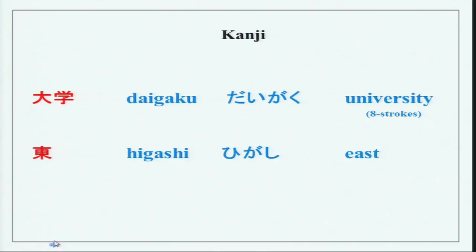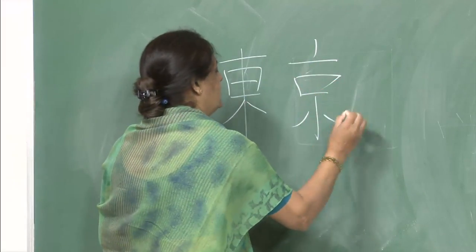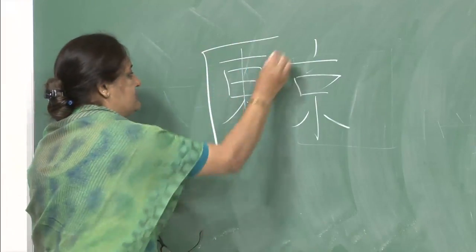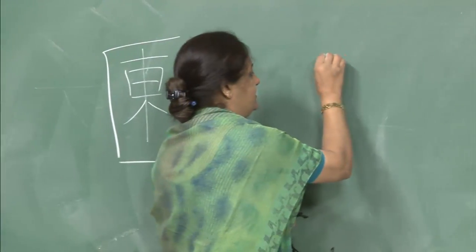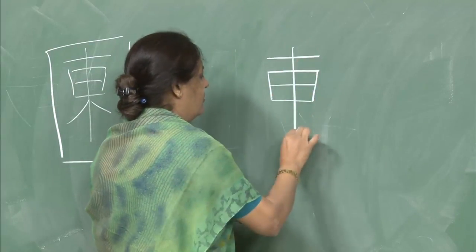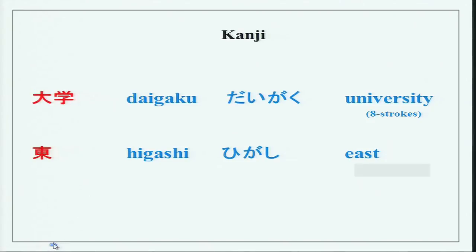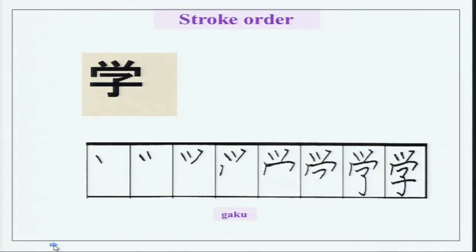Next kanji: Higashi — east. You have seen this character in Tokyo. This character means east. It is an eight-stroke character: 1, 2, 3, 4, 5, 6, 7, 8 — eight strokes meaning Higashi, east. You can see the stroke order for gaku and practice it.